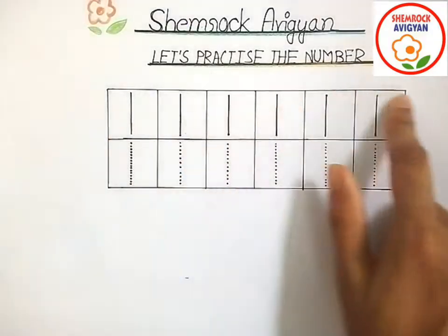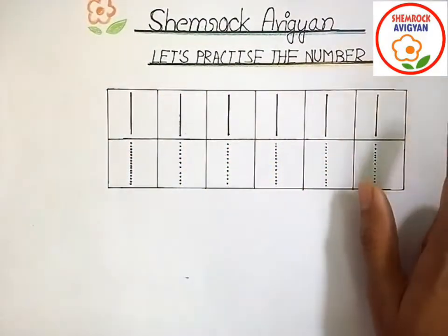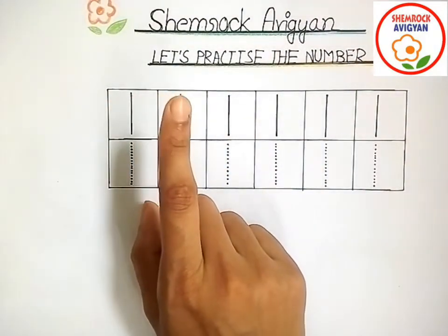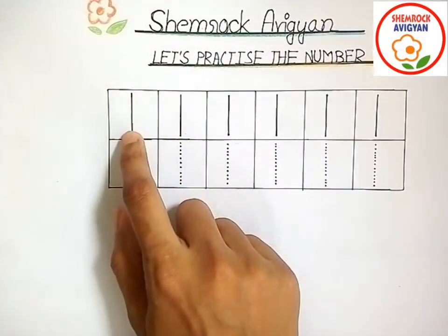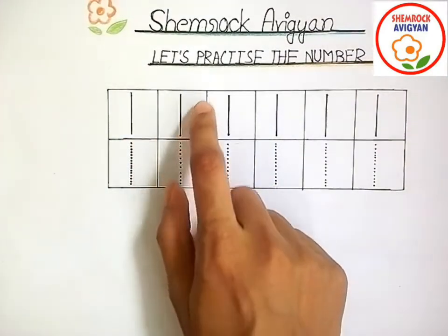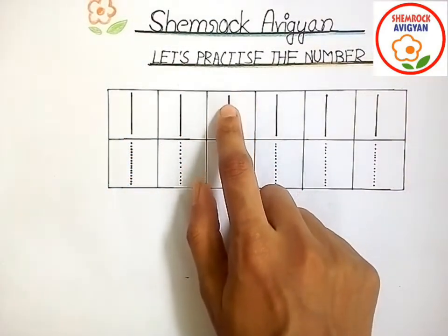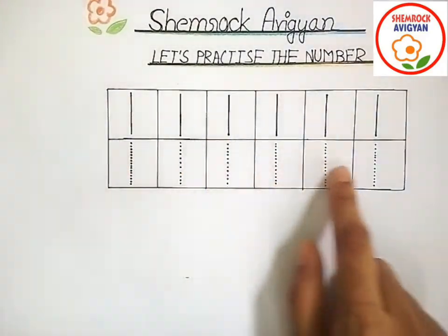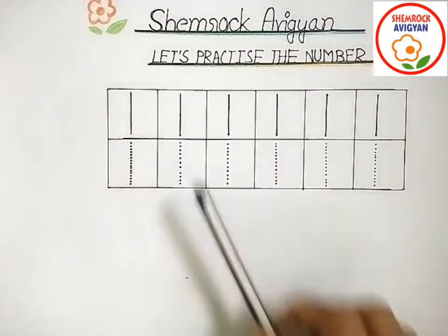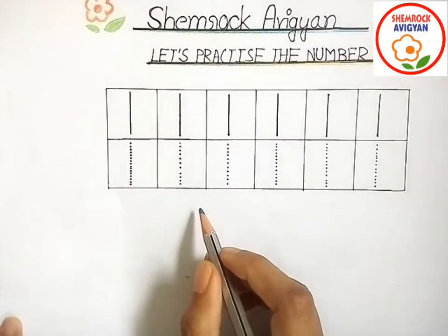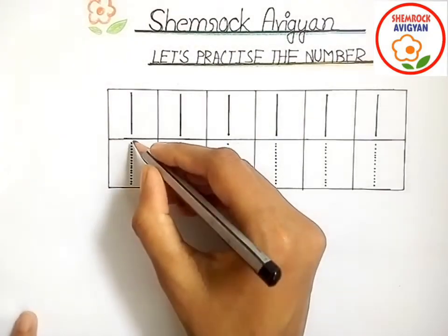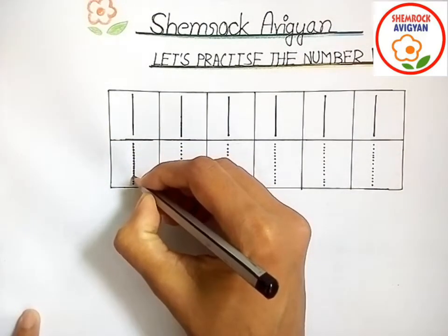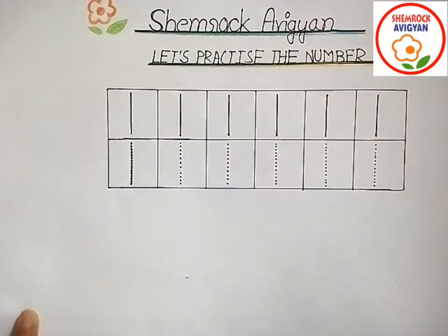So flowers, these are the number 1, right? It is number 1. Now you trace it in your notebook with one finger — tick, like this. Very good. Now let's trace number 1 with a pencil. Come on, take out your pencils. Now we have to join all the dots — join them to write one.